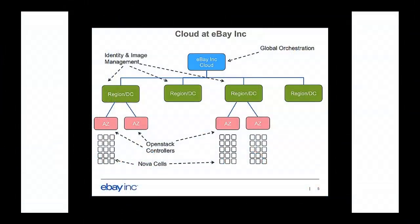Here is the overall big-picture deployment. It's a global cloud with multiple geographic regions. In each region, we are running several availability zones, and we have started using cells for scaling within individual availability zones. We deploy identity and image management today at the regional level, and we are going to make it global. We have OpenStack controllers running at the availability zone level — so when we talk about Nova, Neutron, Cinder — that's deployed at the availability zone level, and the cells are cells.